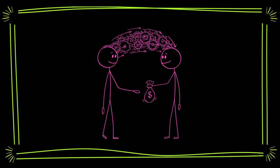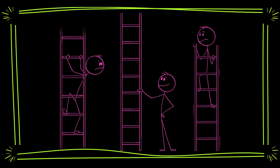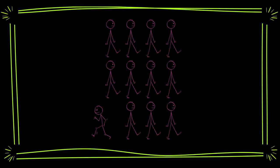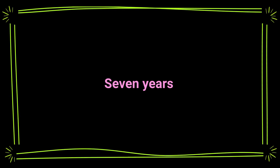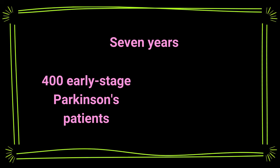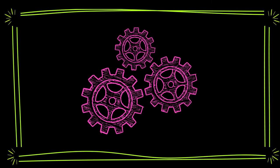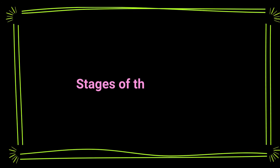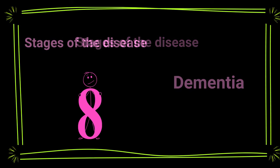In a study funded by the Michael J. Fox Foundation, scientists used advanced statistical methods to track how Parkinson's disease progresses through different stages, considering individual differences and medication effects. Over seven years, they gathered data from over 400 early-stage Parkinson's patients and about 200 healthy individuals. The model they used discovered eight different stages of the disease. The final stage comes with a higher risk of dementia.